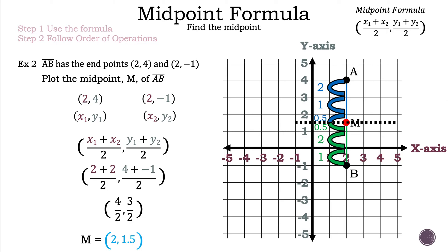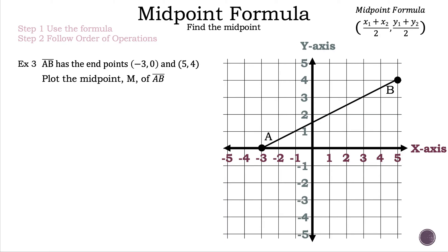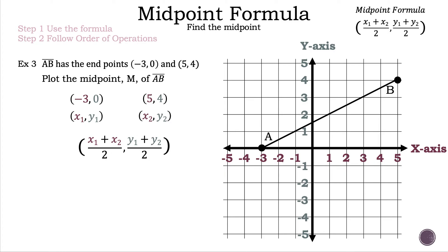Now let's take a look at example 3. Segment AB has the endpoints negative 3, 0 and 5, 4. Plot the midpoint M of segment AB. Segment AB is already plotted. Our points are negative 3, 0 and 5, 4. We label the first point negative 3, 0 as X1, Y1 and the second point 5, 4 as X2, Y2. You can flip-flop the labeling and get the same answer, but we'll continue with this process. Midpoint formula: X1 plus X2 divided by 2 and Y1 plus Y2 divided by 2.